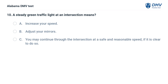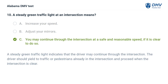A steady green traffic light at an intersection means: A. Increase your speed. B. Adjust your mirrors. C. You may continue through the intersection at a safe and reasonable speed, if it is clear to do so. Correct answer: C. A steady green traffic light indicates the driver may continue through the intersection, yielding to traffic or pedestrians already in the intersection and proceeding when the intersection is clear.